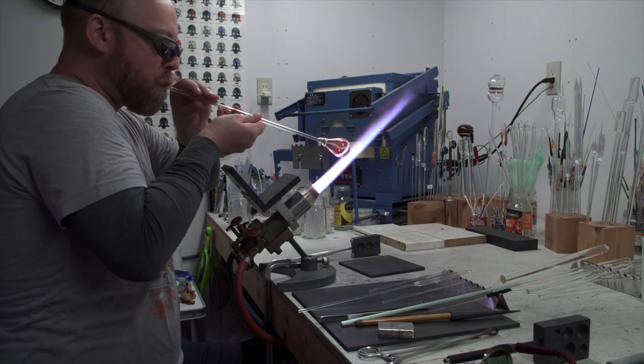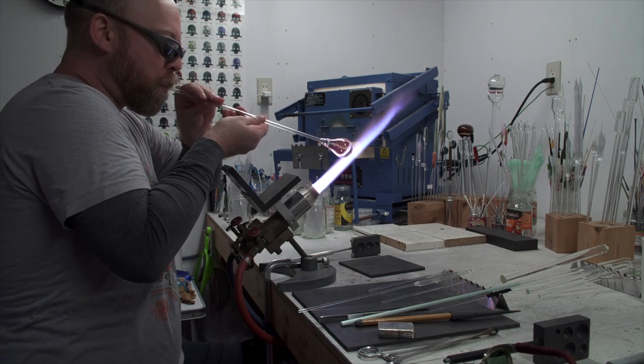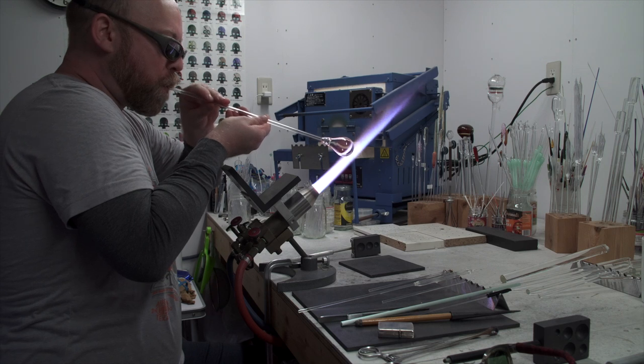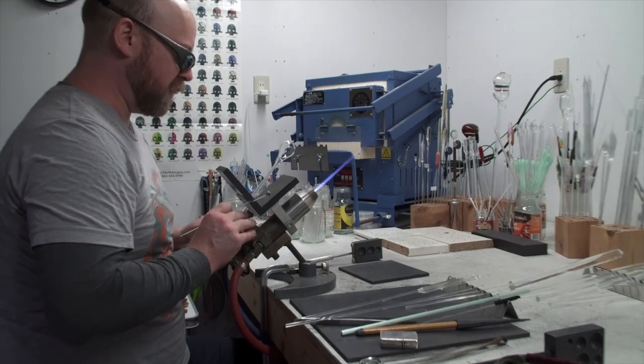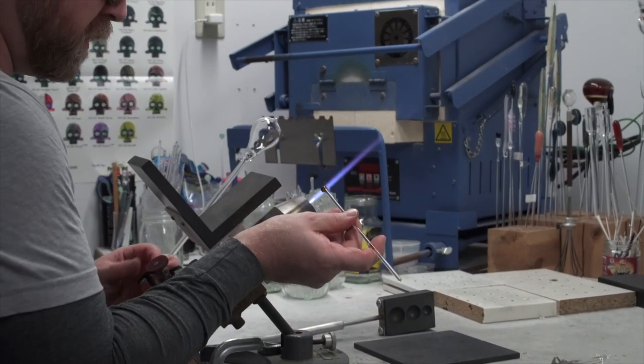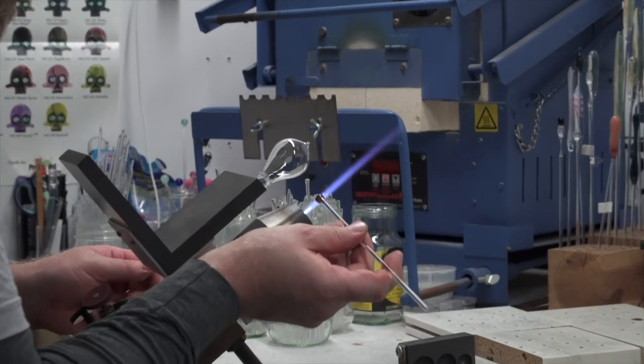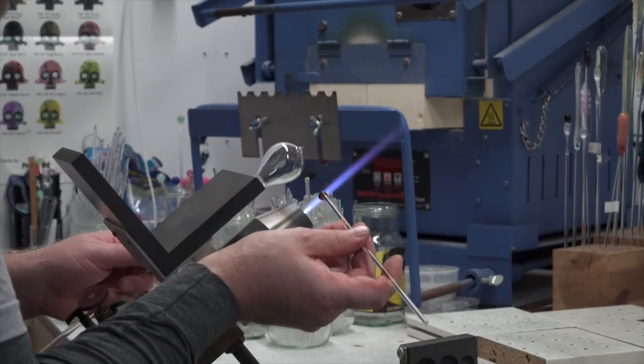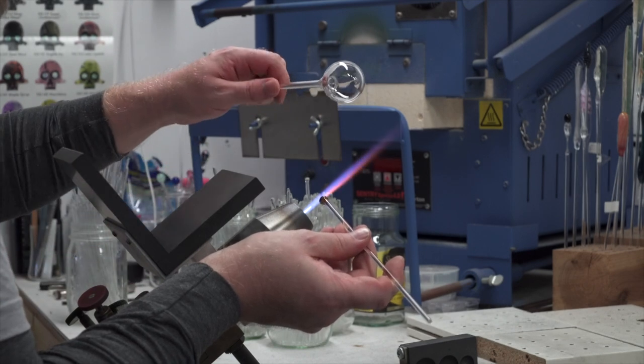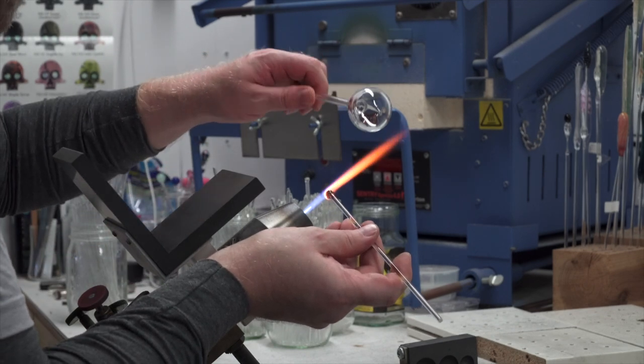After he gets it to the size he wants, he takes a very little bit of 24 karat gold and fumes it over the glass. And remember fuming is just kind of heating up that gold so it makes like a vapor that goes inside of the glass to make it colored. This is just kind of a base for the rest of the fuming.